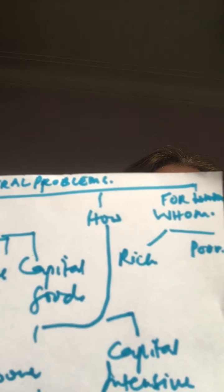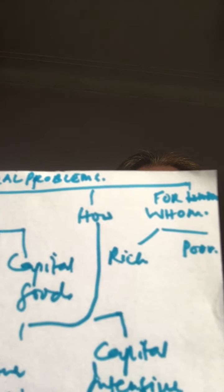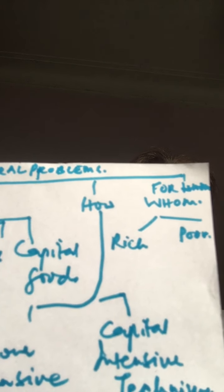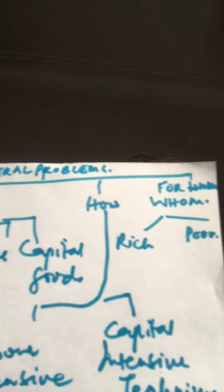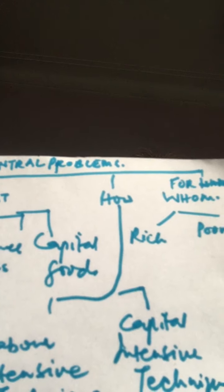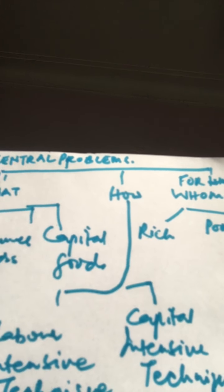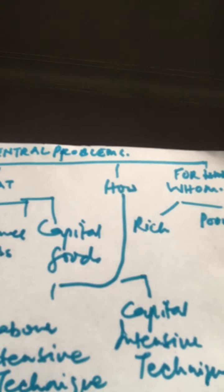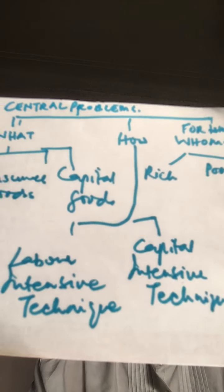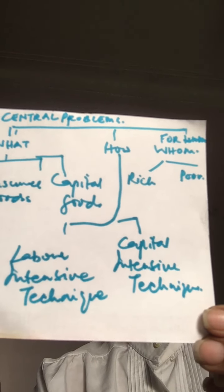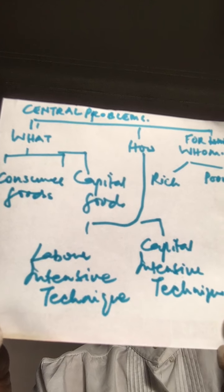So to recap, these are the central problems: what to produce, how to produce, and for whom to produce. When talking about what to produce, it's not just about a certain category of goods — it also has to be in what quantities, as a combination.